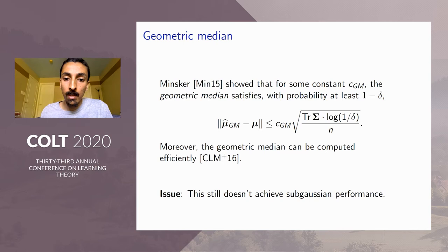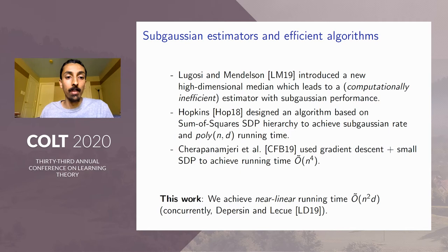So a few years later, Lugosi and Mendelssohn came up with some other definition of high-dimensional median, which does lead to an estimator with sub-Gaussian performance. Unfortunately, this estimator is computationally inefficient. In particular, a naive computation of it would require exponential running time.